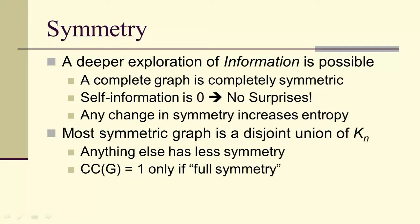So for instance, a complete graph is completely symmetric. In general, the most symmetric graph is a disjoint union of complete graphs. Anything else has less symmetry. And the clustering coefficient, remember, is 1—we can think of that as a probability.